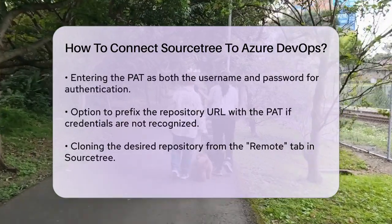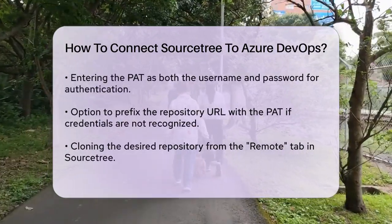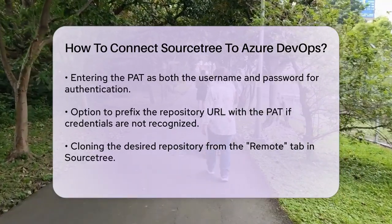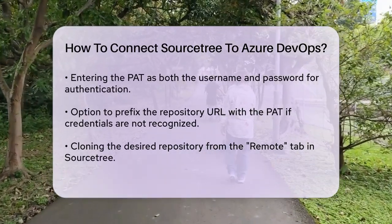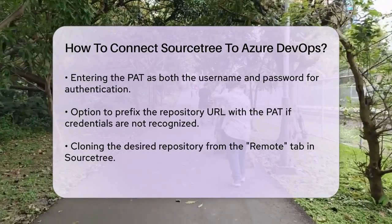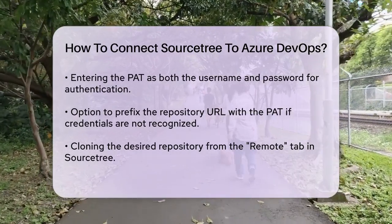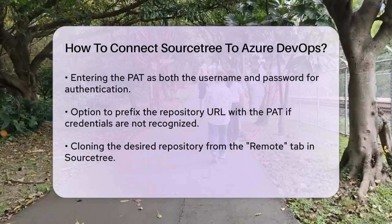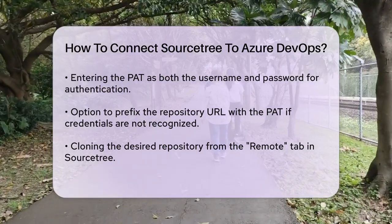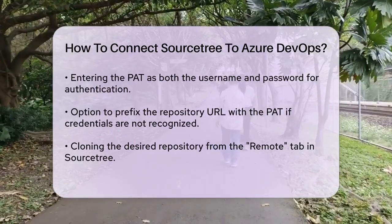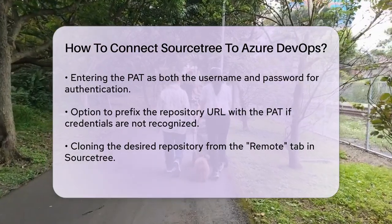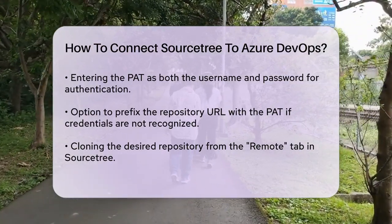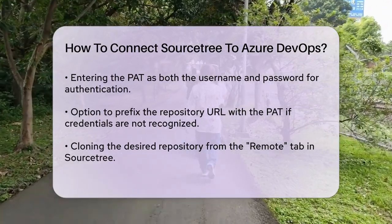After setting up the account, you'll see a list of your repositories in the Remote tab. Select the repository you want to clone and click the Clone button. All the fields should be prefilled so you can proceed with the cloning process. It's also worth mentioning that if you encounter any issues with the credentials being ignored, you can manually specify the credentials in the repository URL. This ensures that SourceTree uses the correct PAT for authentication.